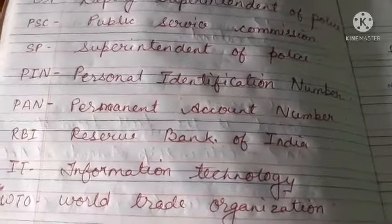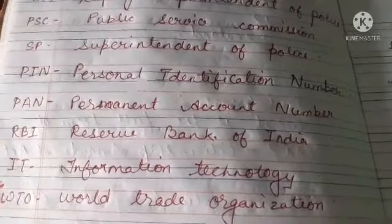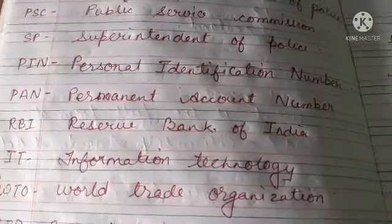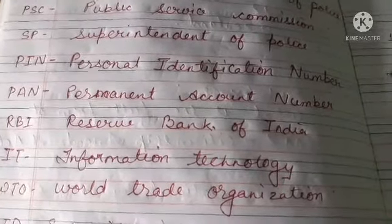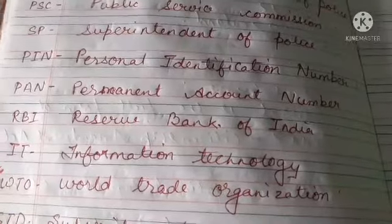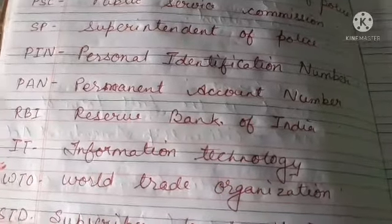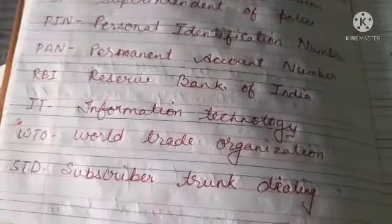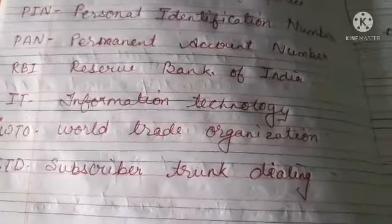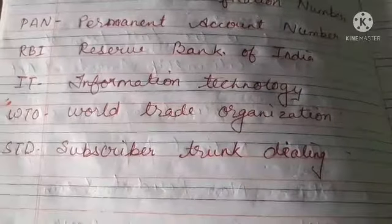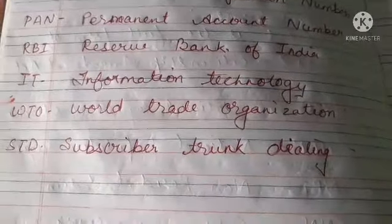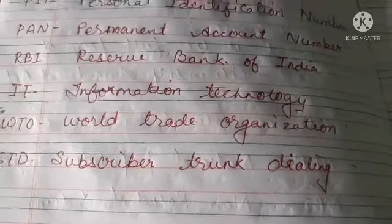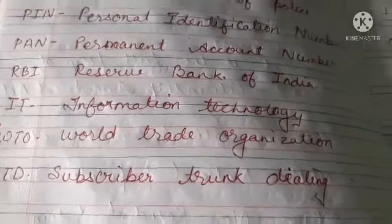SP — Superintendent of Police. PIN — Personal Identification Number. PAN — Permanent Account Number. RBI — Reserve Bank of India. IT — Information Technology. WTO — World Trade Organization. STD — Subscriber Trunk Dialing.